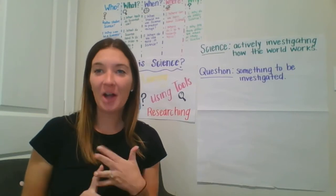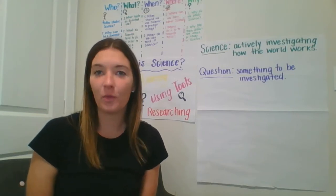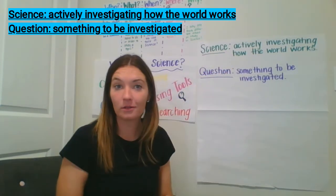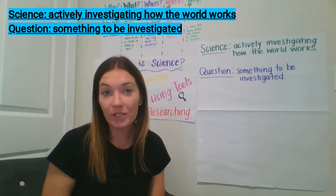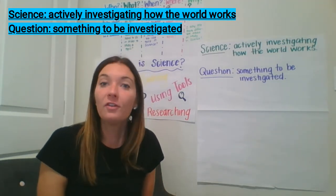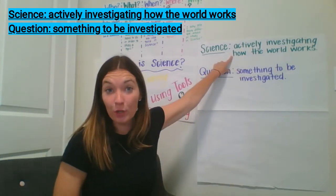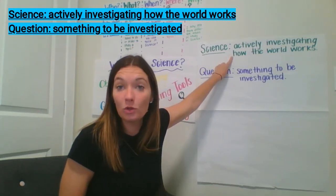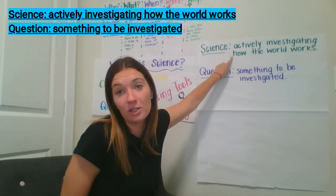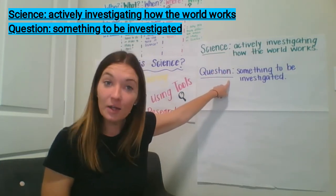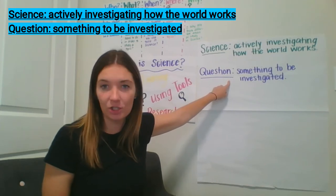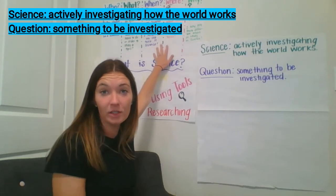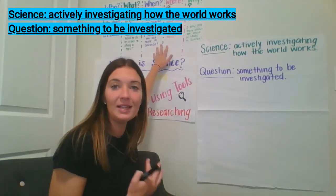Now that we've read a book, talked about science, and looked at pictures, let's define the word. This is science — science is actively investigating how the world works. Right now, you're going to use your science notebook to write that definition down. Feel free to pause this video so you can copy the green science definition down into your notebook. If you can't get the one to work in front of you, you can also jot this down and write it in one of your notebooks and send a picture to your teacher. The second word that we're going to define today is question. A question is something to be investigated.